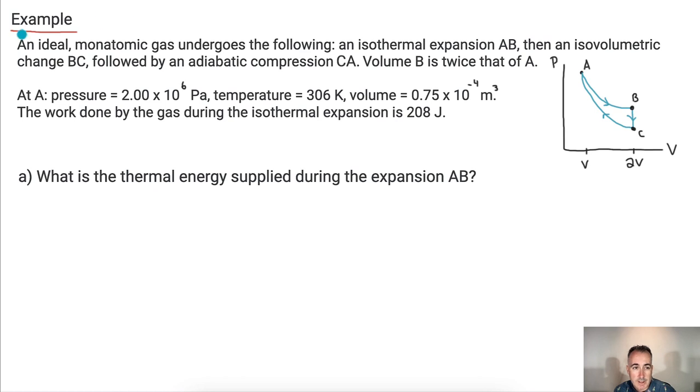All right let's look at this question. We're told we have an ideal monatomic gas, it undergoes the following: first an isothermal expansion AB. So from here to here isothermal, so temperature is not changing. Then isovolumetric change BC, and that means the volume stays the same. An adiabatic compression C to A, that means Q is zero when it's adiabatic. And we're told the volume of B is twice that of A. So whatever this volume is here, volume B is twice that. We know that at point A we know the pressure, we know the temperature, and we know the volume at A. We're told that the work done by the gas during the isothermal expansion is 208 joules.